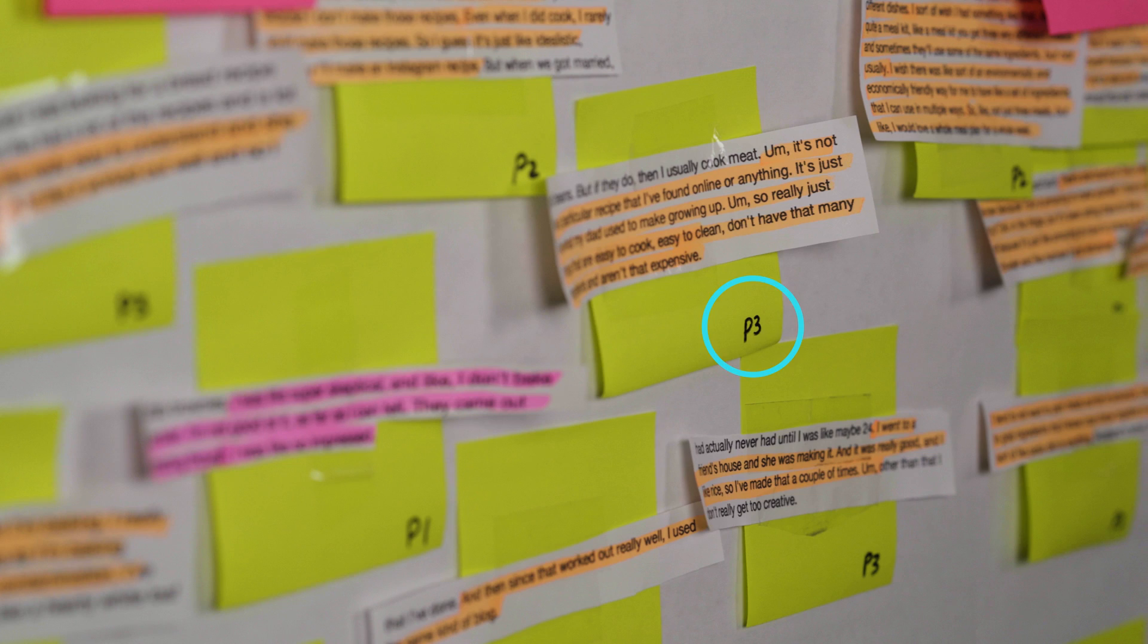Also, make a note of the participant number on each sticky so that you can refer back to the full transcript if you need to. We now have all of these stickies on the whiteboard. What we want to do now is organize these in terms of what they're about.